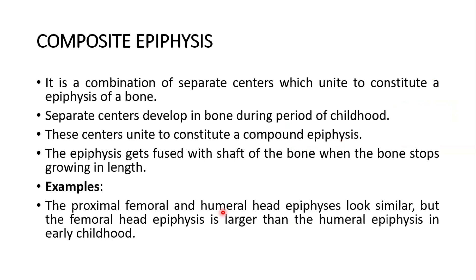Next, composite epiphysis. It is a combination of separate centers which unite to constitute an epiphysis of a bone. Separate centers develop in a bone during the period of childhood and unite to constitute a compound epiphysis. The epiphysis gets fused with the shaft of the bone when the bone stops growing in length. The proximal femoral and humeral head epiphyses look similar, but the femoral head epiphysis is larger than the humeral epiphysis in early childhood.